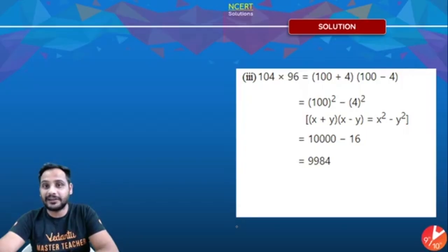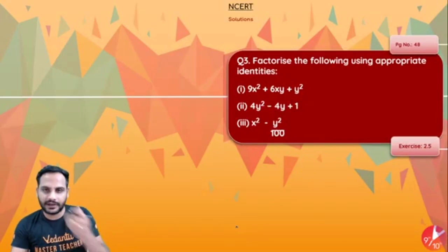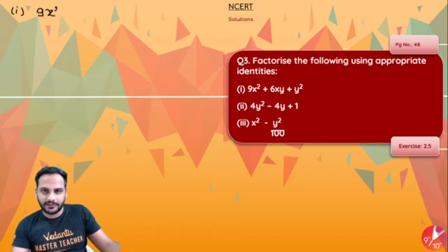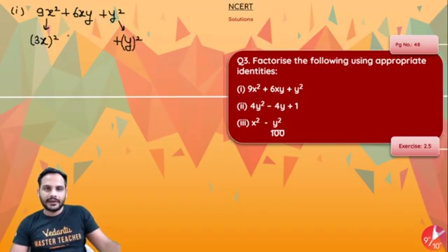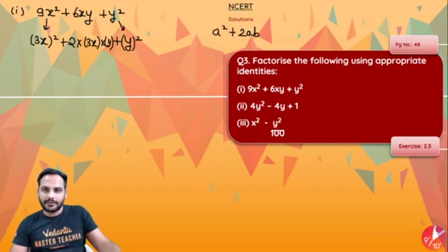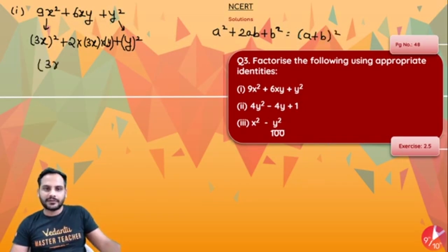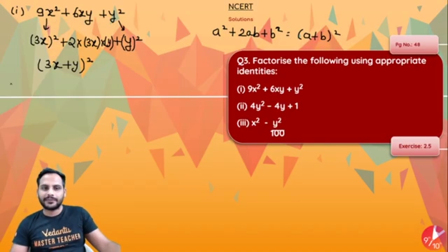That was Question 2 — multiplication using identities without actual multiplication. Now Question 3: factorize the following using appropriate identities. The first one is 9x² + 6xy + y². Notice that 9x² is (3x)², y² is (y)², and 6xy = 2×3x×y. This matches a² + 2ab + b² = (a + b)², so the answer is (3x + y)².